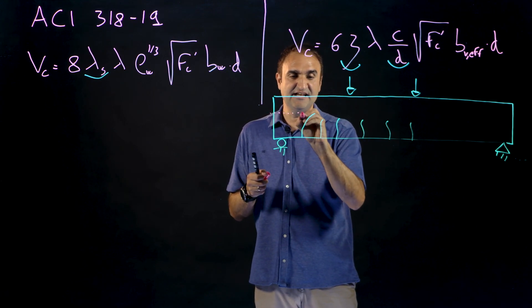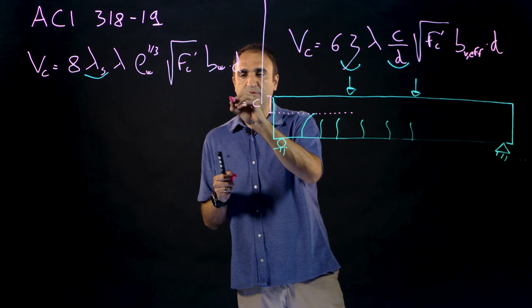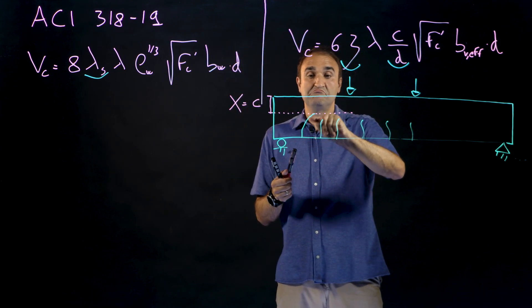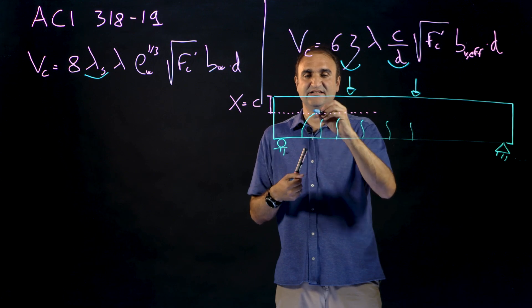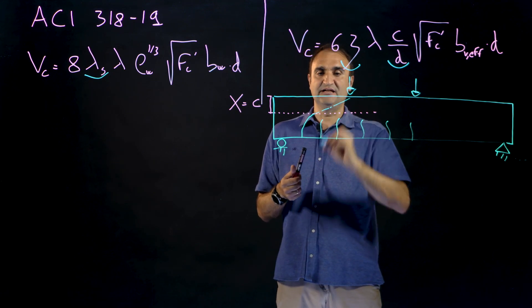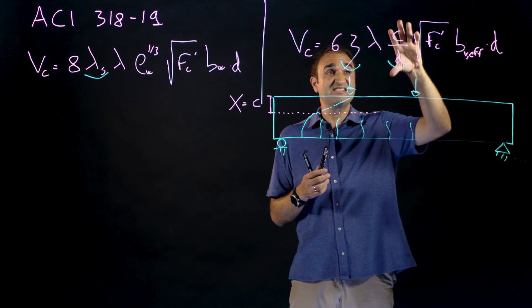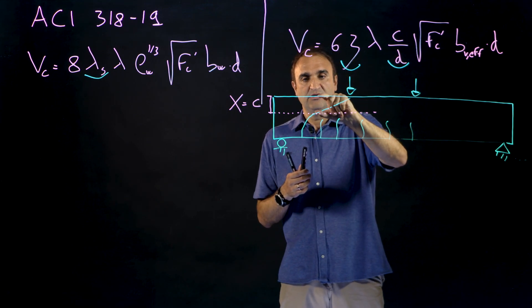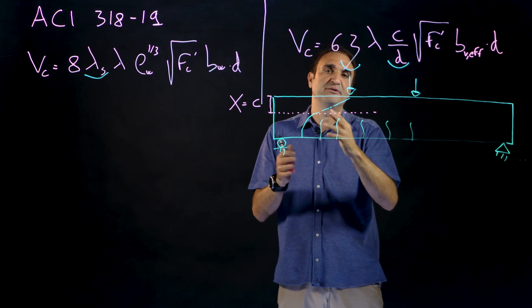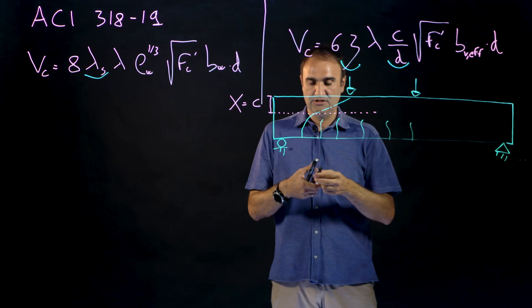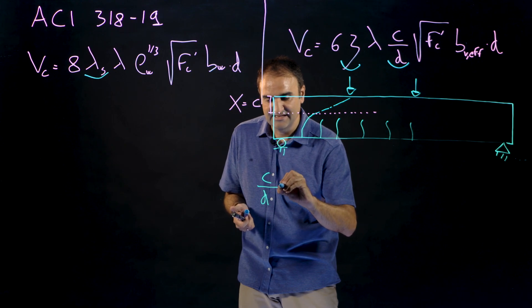The shear crack, what we have seen and many other authors developed, occurs in two different stages. First it gets until here, this is c or in Europe we call this x, with a slope. And then it gets here inside the compression zone much more horizontal until the failure.